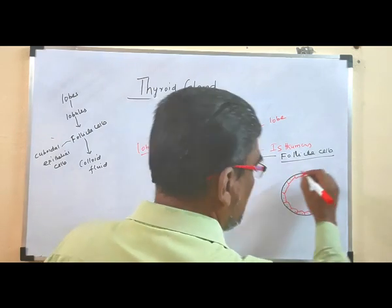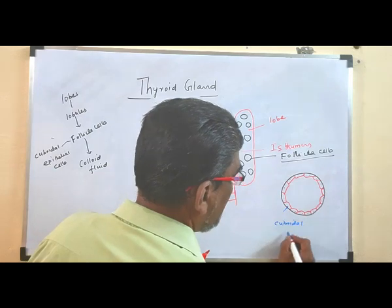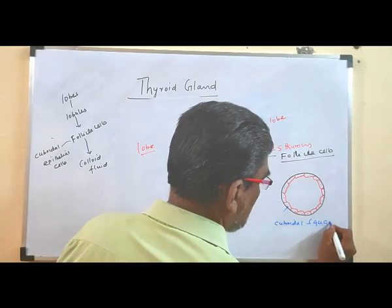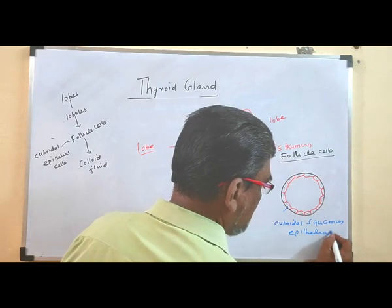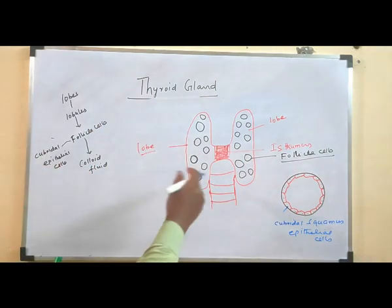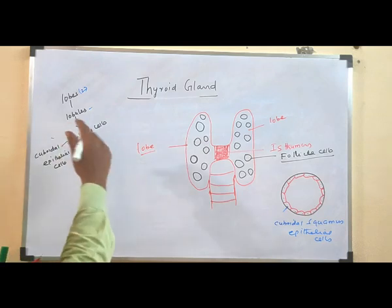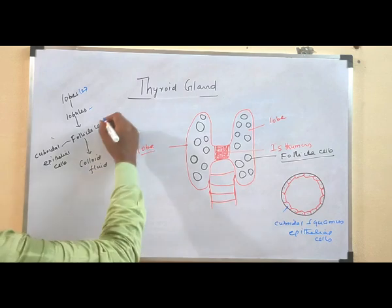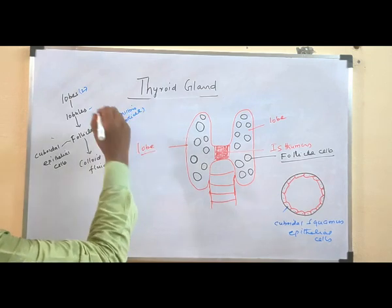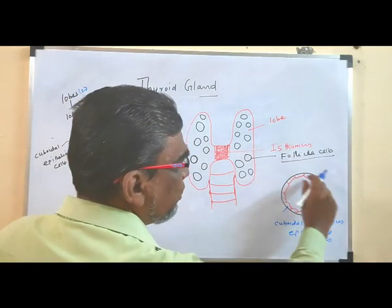These cells are called cuboidal squamous epithelial cells. So, to recap: the thyroid gland has two lobes; these lobes contain several lobules; inside the lobules, several follicle cells are present — approximately three million follicle cells in the thyroid gland. These follicle cells are lined with cuboidal squamous epithelial cells.